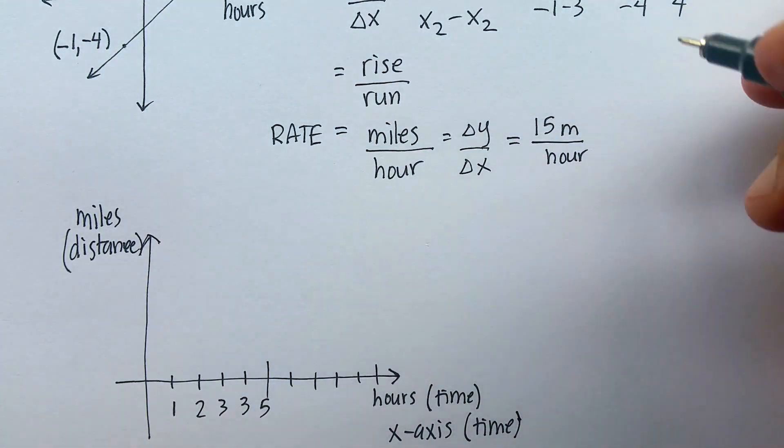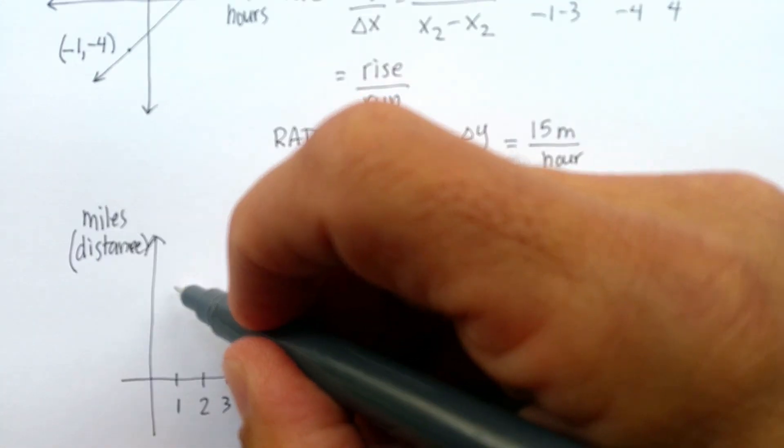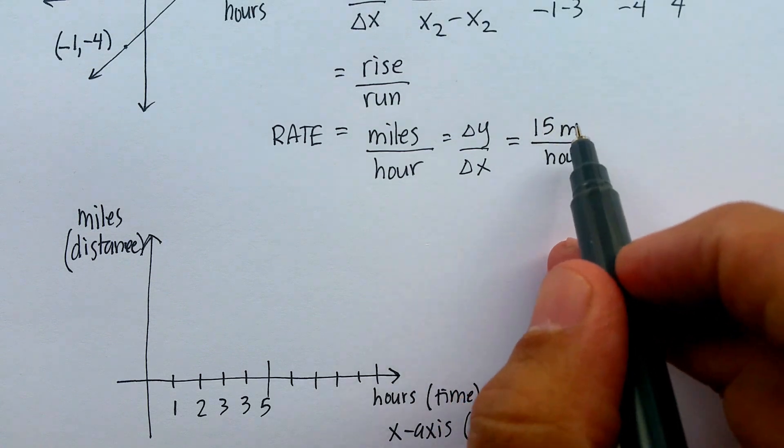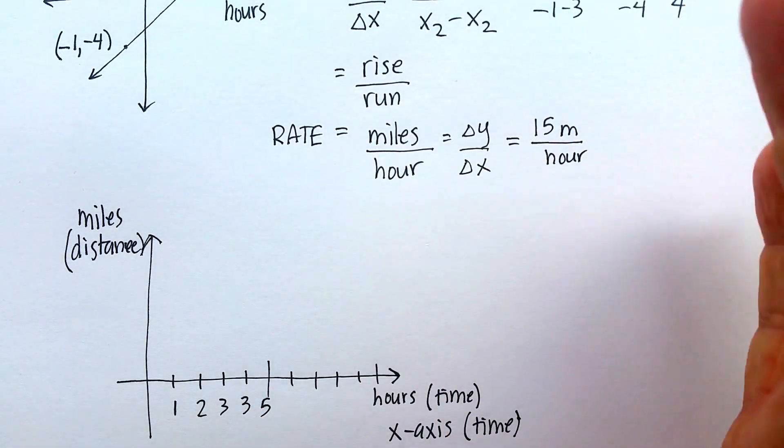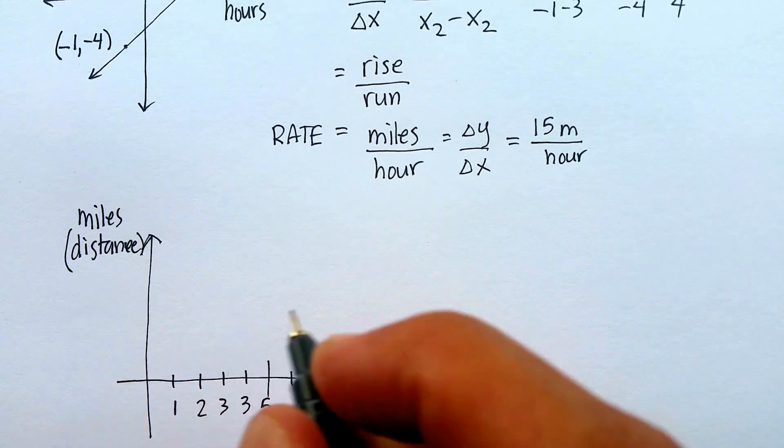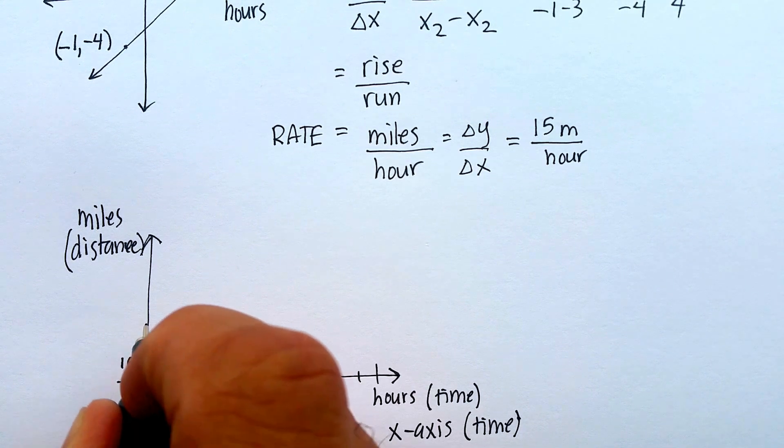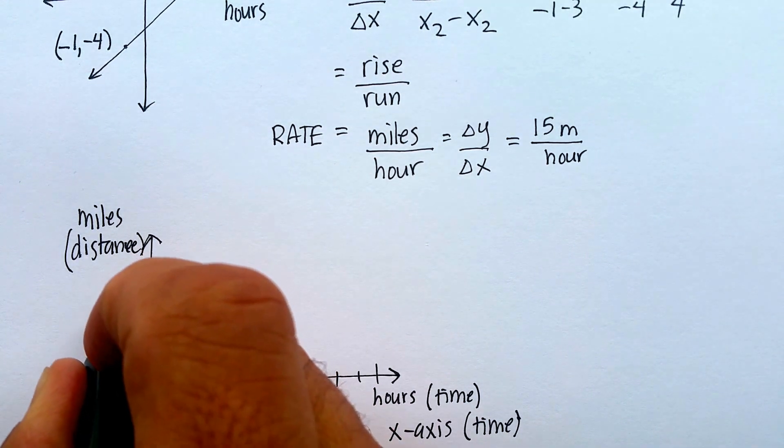Now we know that it's 15 miles per hour, so that means that after one hour, I need to go up to where 15 is located. You probably want to take into account how many miles or how much distance you want in this particular problem. So maybe we should do something like increments of 10. So we'll say 10, 20, 30, 40, 50.